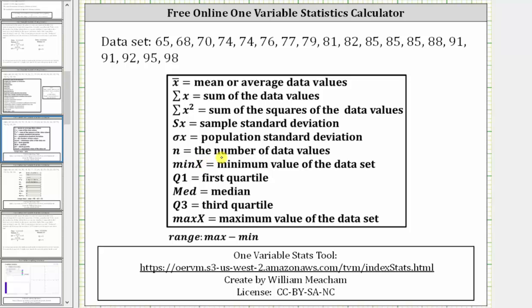Min X is equal to the minimum value of the data set. Q1 is equal to the first quartile. Med is equal to the median. Q3 is equal to the third quartile. And max X is equal to the maximum value of the data set.